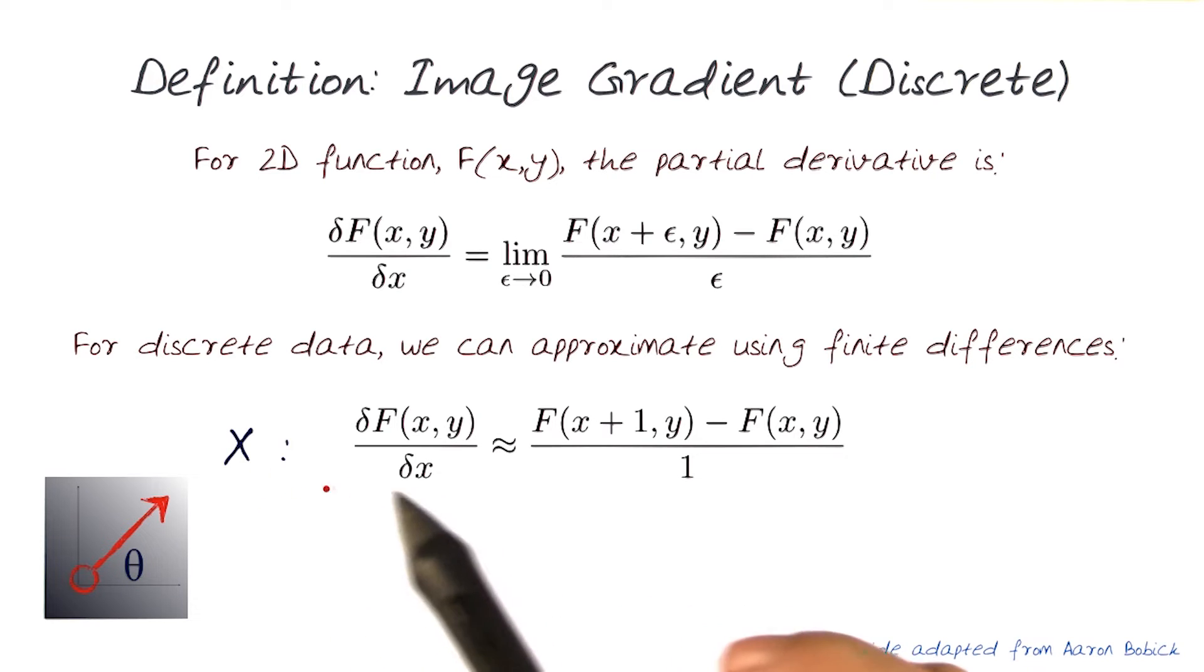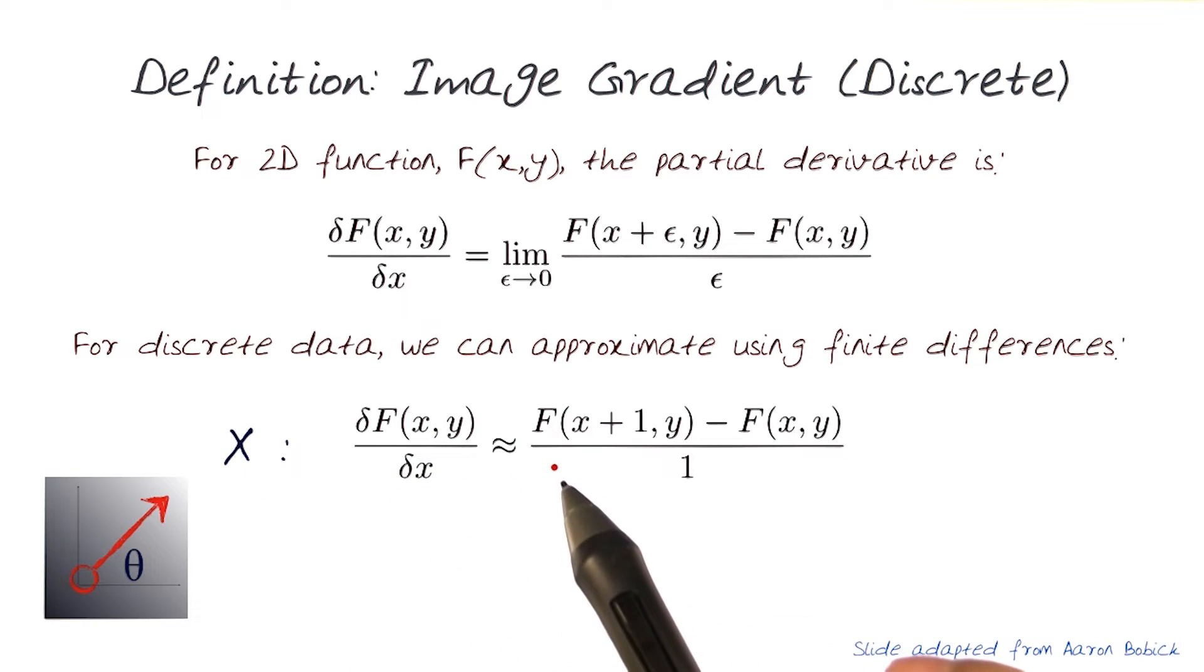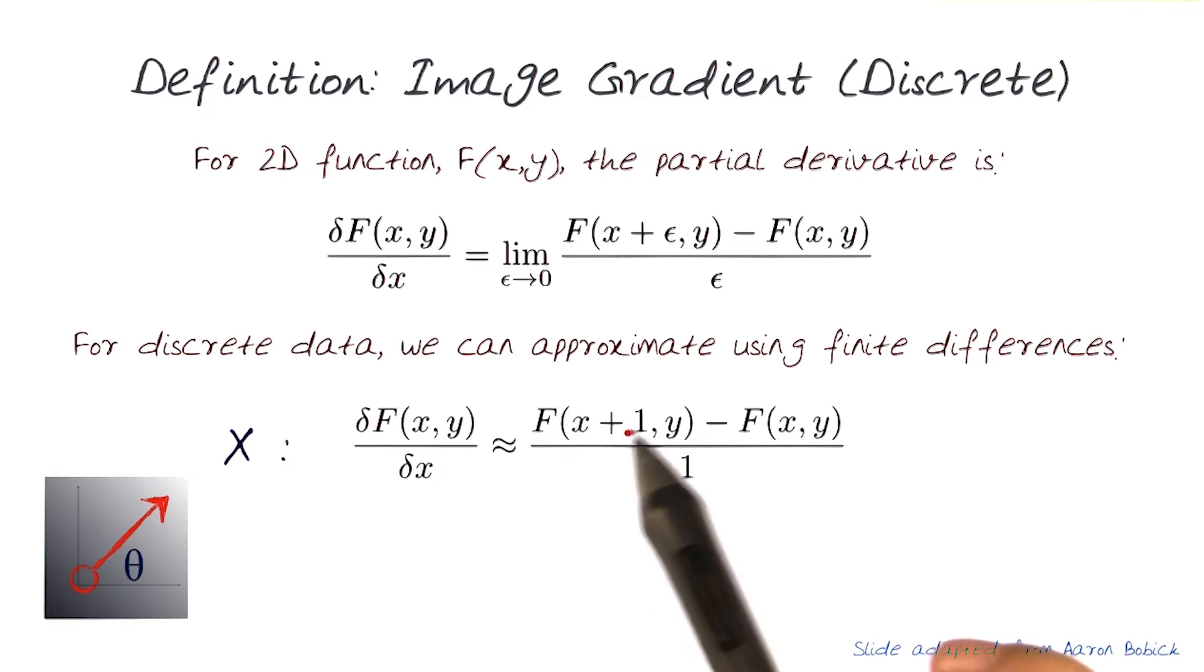which basically says for x, the del f could be approximated with just moving one index point in x. As we've always looked at, images are discrete samples of moving from one row to the other. In this case, one column to the other,